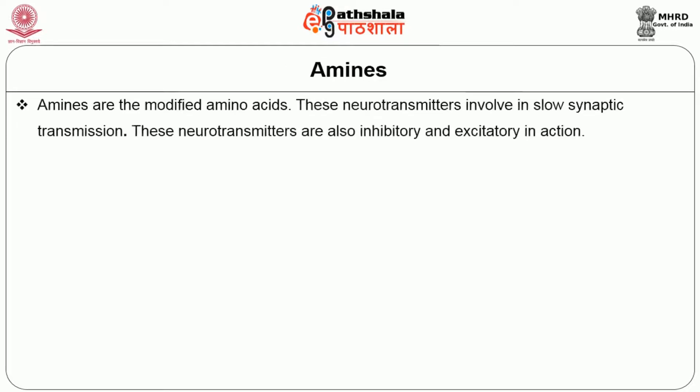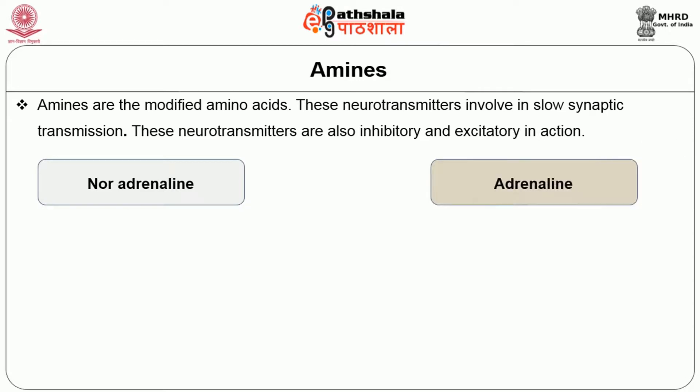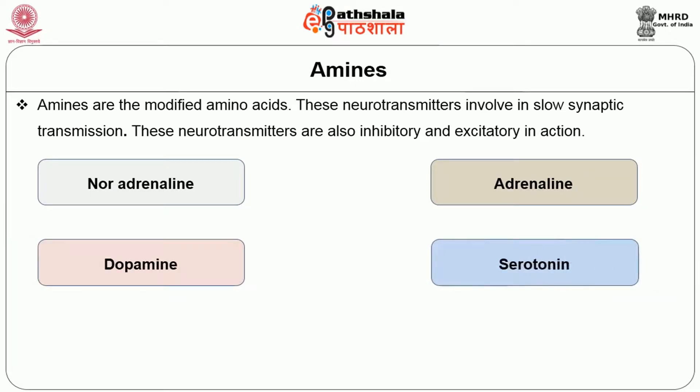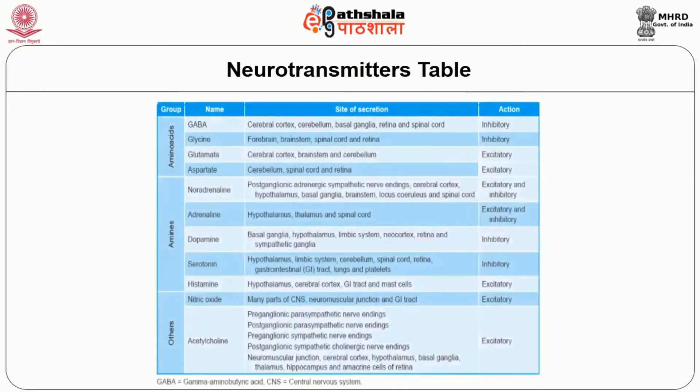The second group is amines — these are modified amino acids. These neurotransmitters are involved in slow synaptic transmission and are also inhibitory and excitatory in action. Examples include noradrenaline, adrenaline, dopamine, serotonin, and histamine.